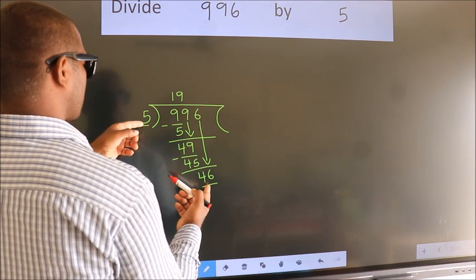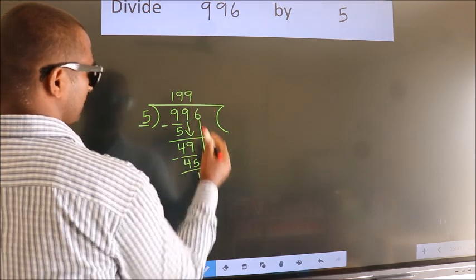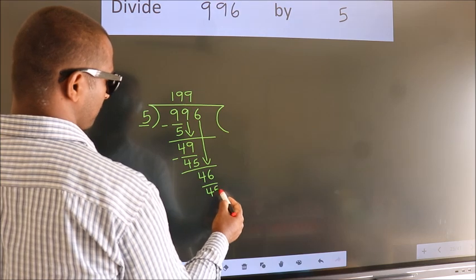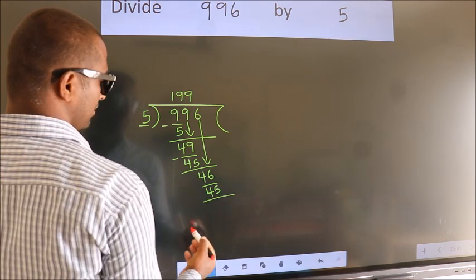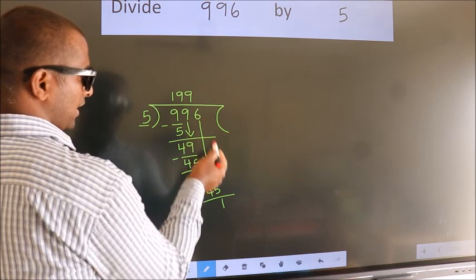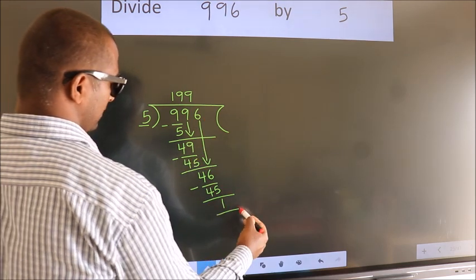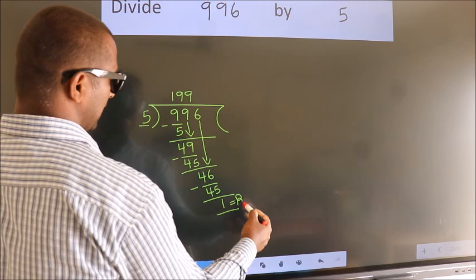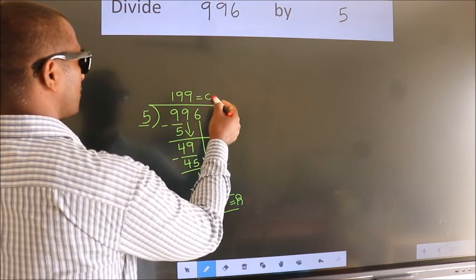...in the 5 table is 5 times 9, which is 45. Now we subtract and get 1. No more numbers to bring down, so we stop here. This is our remainder; this is our quotient.